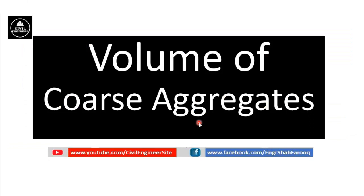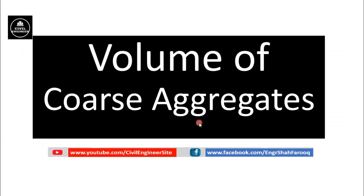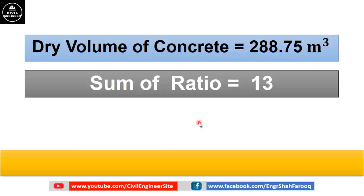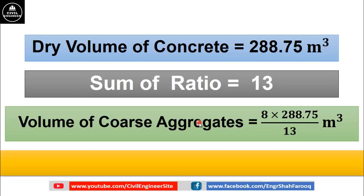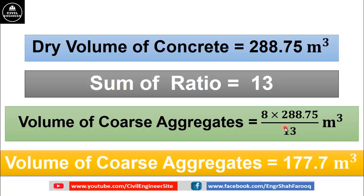Following the same method, we will calculate the volume of coarse aggregate or crushed stones. Volume of coarse aggregate equals 8 multiplied by 288.75 divided by 13. This 8 is the ratio of coarse aggregate or crushed stones, 288.75 is the total dry volume of concrete and 13 is the sum of ratios. After doing simple calculation, we get volume of coarse aggregate as 177.7 cubic meters.